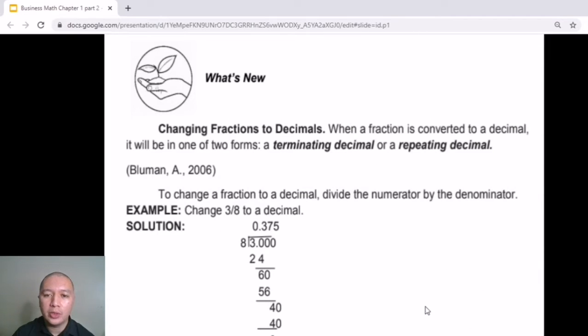What's new with this module is the discussion of different types of decimals. So when we are confronted with a fraction and then we would have to change it to a decimal, we will be given two types of answers. The first one would be a terminating decimal and the second would be a repeating decimal.